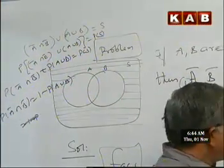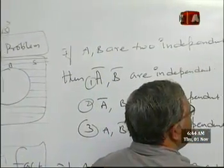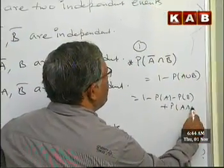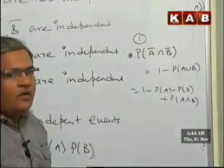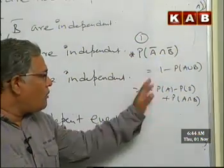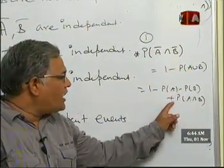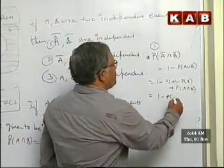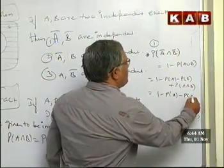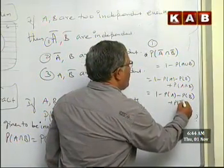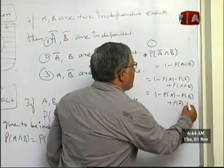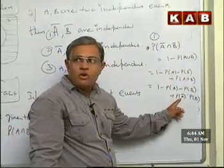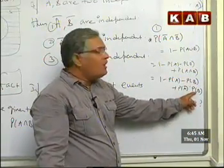This is nothing but 1 minus probability of A union B. Now we utilize the addition theorem of probability: probability of A union B is equal to probability of A plus probability of B minus probability of A intersection B. Since A and B are independent, probability of A intersection B becomes probability of A into probability of B.